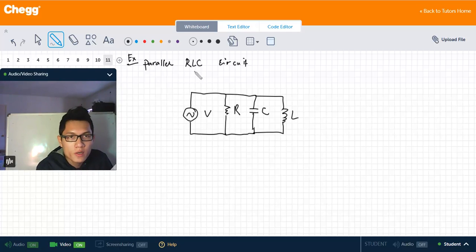We want to find the total admittance of the RLC circuit. Remember, the total admittance of the whole circuit is equal to the sum of each of the admittances of R, C, and L.